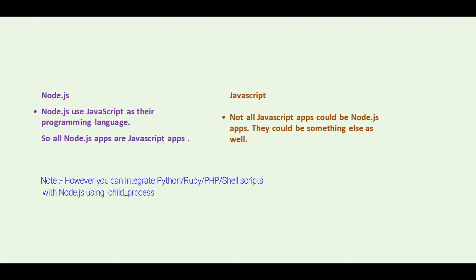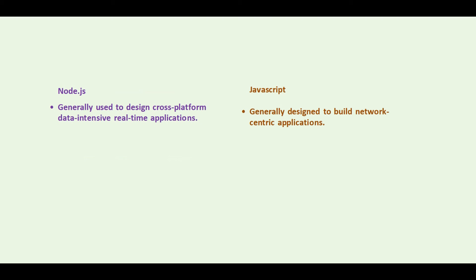Since Node.js uses JavaScript as its programming language, essentially all Node.js apps are JavaScript apps. On the other hand, not all JavaScript apps could be Node.js apps — they could be something else as well. Node.js is generally used to design cross-platform, data-intensive, real-time applications, and JavaScript is generally used to build network-centric applications.